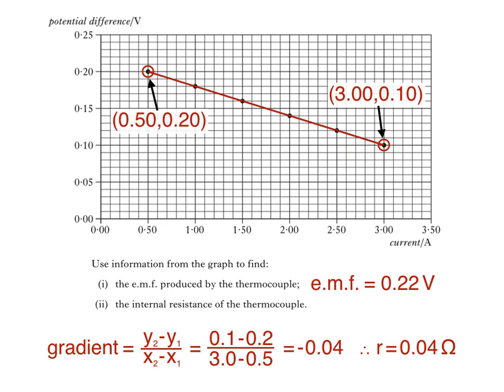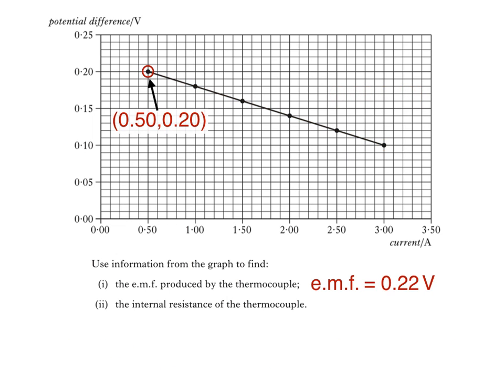In this question we're finding the EMF and internal resistance of a thermocouple, but the same method can be used to find the EMF and internal resistance of a cell or variable power supply. I'll show you another way to answer part 2 of the question, which uses an equation from the relationship sheet. Here we only need to select one point on the graph — it can be any one of the six points shown, as they're all on the best fit line.